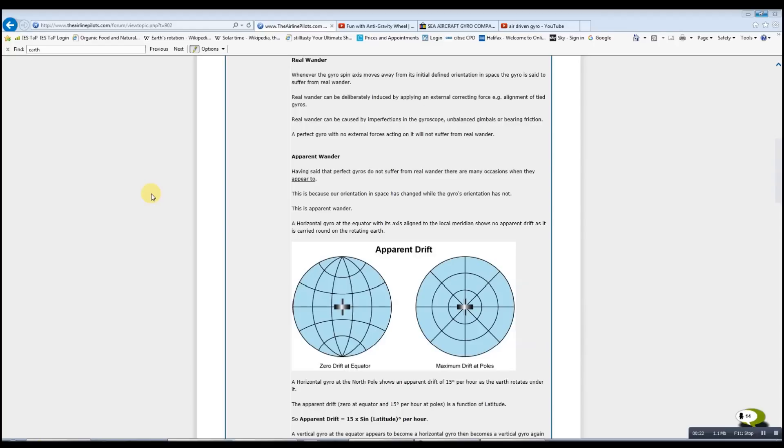So this article reads: Real wander. Whenever the gyro spin axis moves away from its initial defined orientation in space, the gyro is said to suffer from real wander. Real wander can be deliberately induced by applying an external correcting force, or caused by imperfections in the gyroscope, unbalanced gimbals, or bearing friction. A perfect gyro with no external forces acting on it will not suffer from real wander.